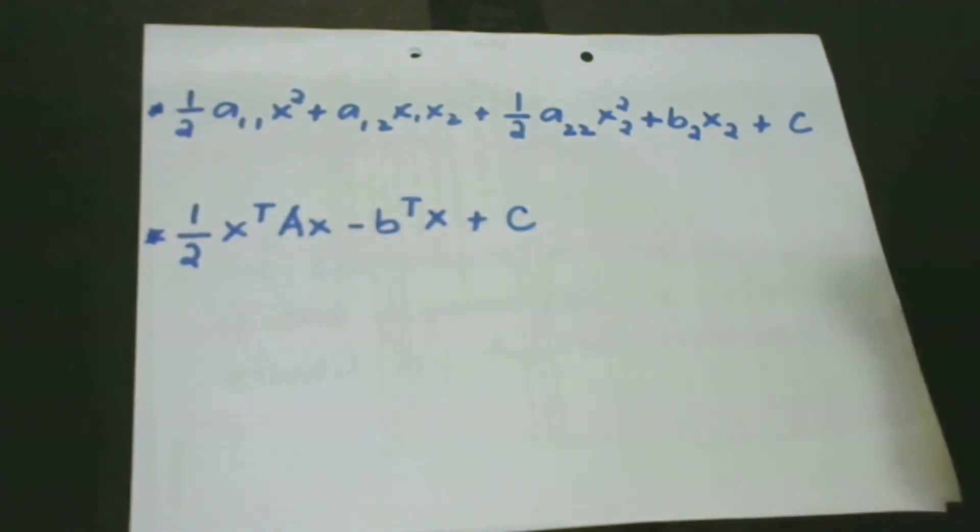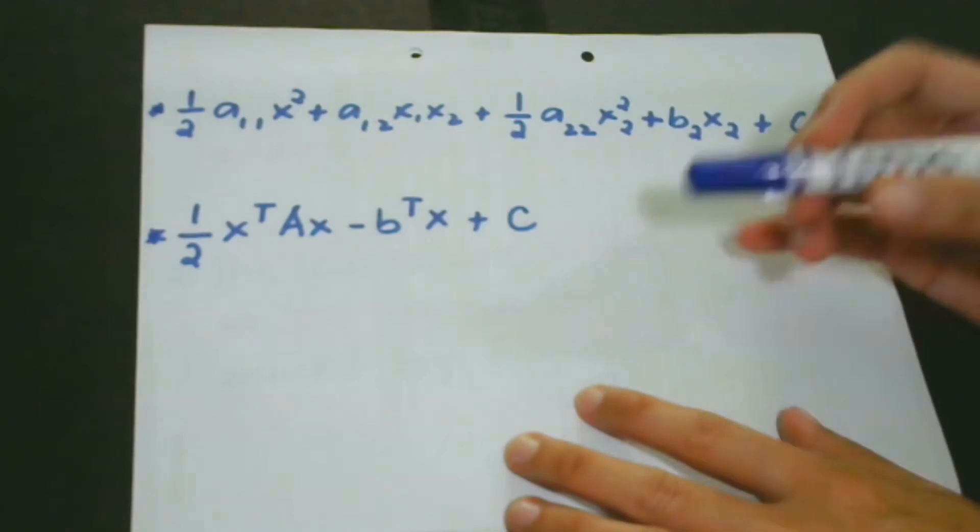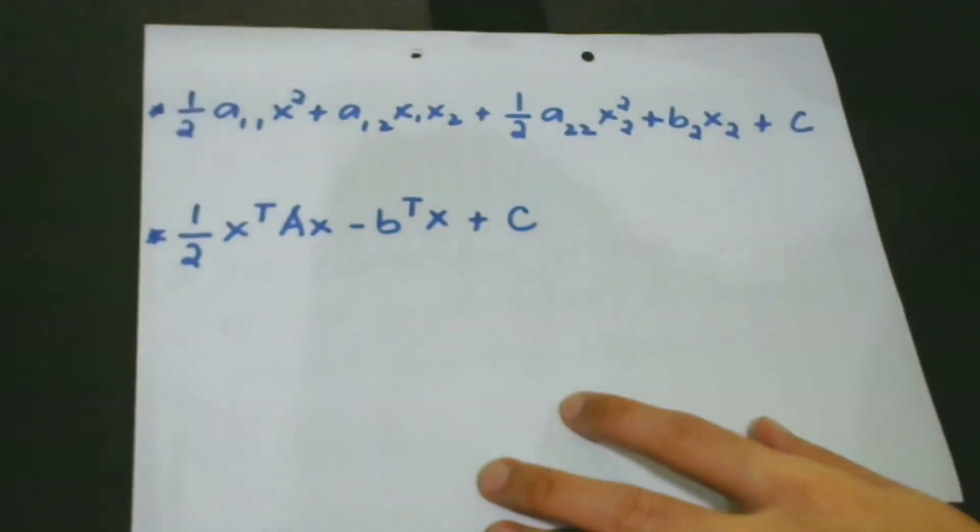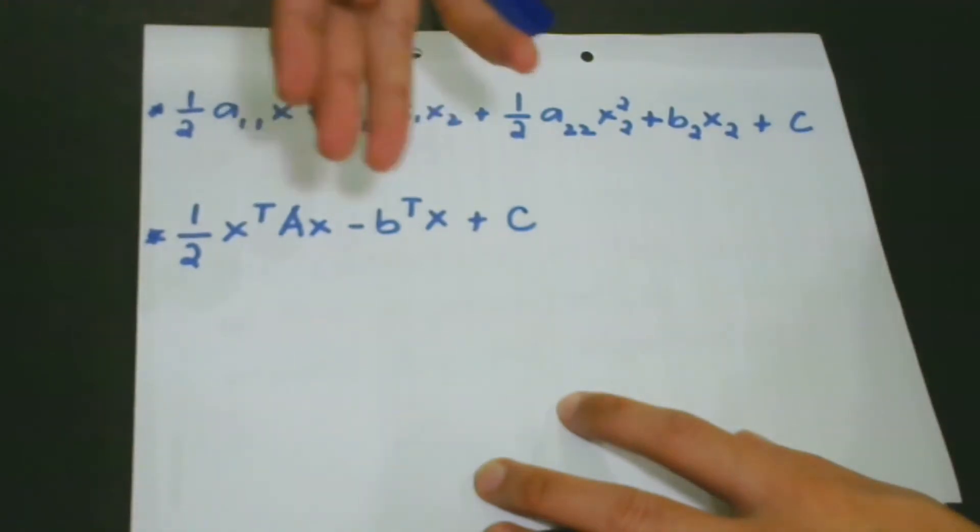As what we have learned, a quadratic form is expressed mathematically as one-half a11x squared plus a12x1x2 plus one-half a22x squared 2 plus b2x2 plus c. So maybe you would like to ask me what is this one? Of course, if you are very much familiar with matrix, then you would understand and you would know what these subscripts mean. So this is the row, the first row, first column.